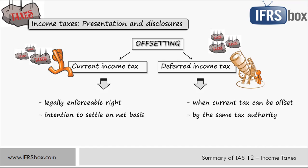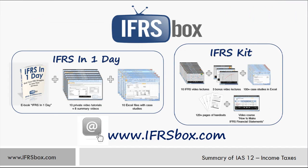IAS 12 requires a number of disclosures related to income taxes — for example, major components of tax expense shall be disclosed separately, the amount of income tax charged directly to equity and other comprehensive income, and explanation of changes in tax rates, among others. That was a short summary of IAS 12. I appreciate you watching the video and I trust you learned a lot. If you or one of your colleagues or friends want to take your IFRS knowledge deeper, check out a sample of the course IFRS in One Day by signing up for email updates at ifrsbox.com. You will also receive the ebook 'Top 7 IFRS Mistakes That You Should Avoid.' You will be joining thousands of other accountants who have benefited from my courses. Thanks again and have a nice day.